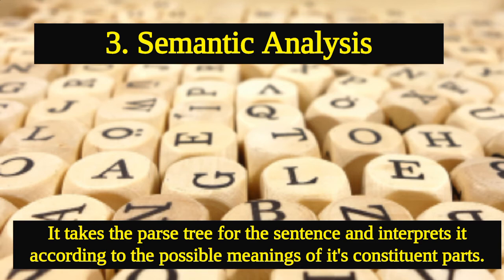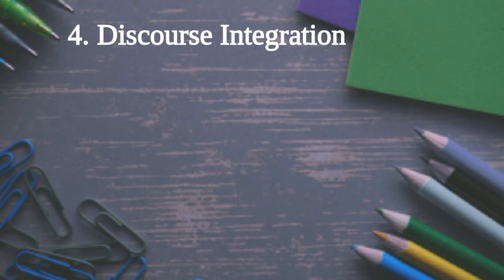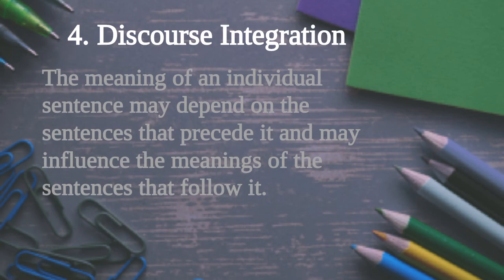The next phase is discourse integration. The meaning of any sentence depends on the statements that came before it. For example, 'She is playing chess' — who 'she' is will be determined by looking at the preceding statements. A discourse is any string of language, usually more than one sentence long. The meaning of an individual sentence may depend on the sentences that preceded it and may influence the meanings of the sentences that follow it.